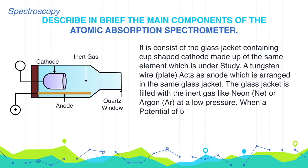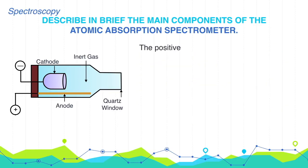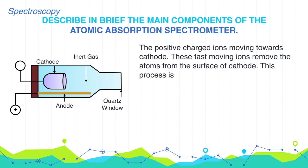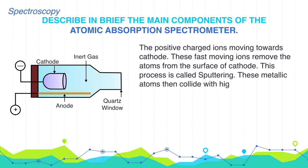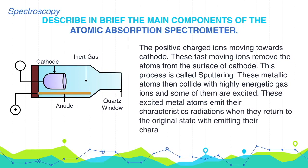When a potential of 500 to 1000 volts is applied between the two electrodes from the power supply, the atoms of the inert gas are ionized. The positively charged ions move towards the cathode. These fast-moving ions remove the atoms from the surface of the cathode — a process called sputtering. These metallic atoms collide with highly energetic gas ions and some are excited. When these excited metal atoms return to the ground state, they emit their characteristic radiations.